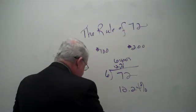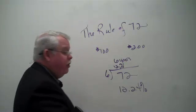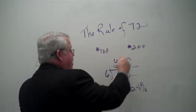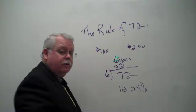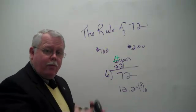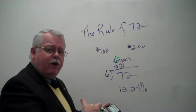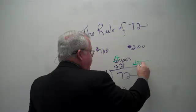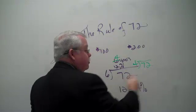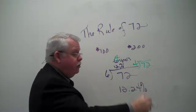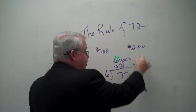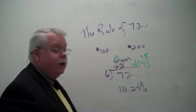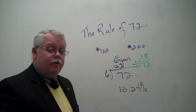Make sure you understand this. What if we said, I doubled my money in four years — what approximate interest rate were you earning? Four into 72: the rule of 72 gives us 18%. You doubled your money because you were earning 18%.